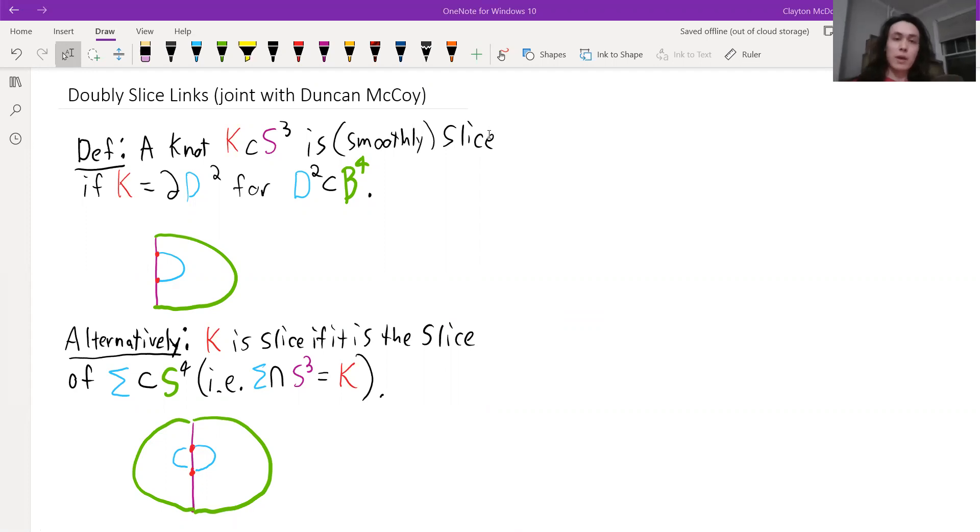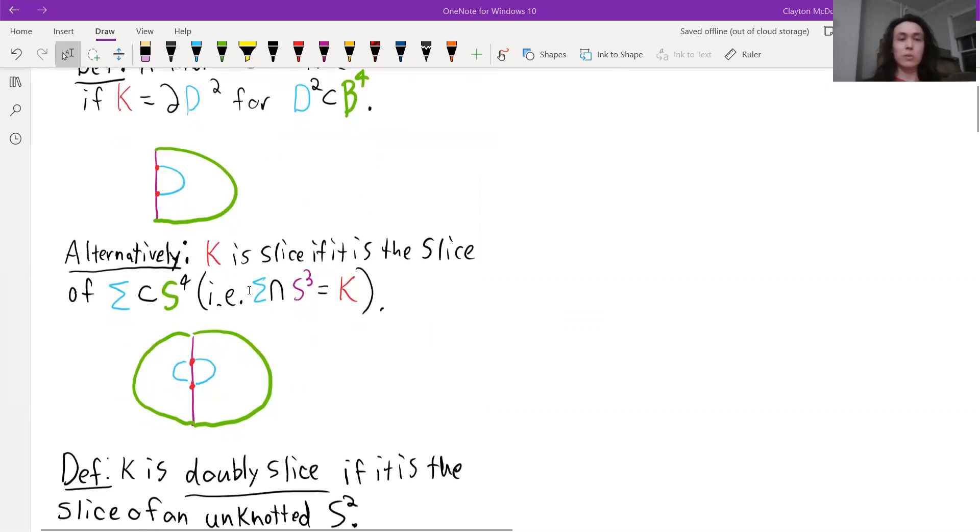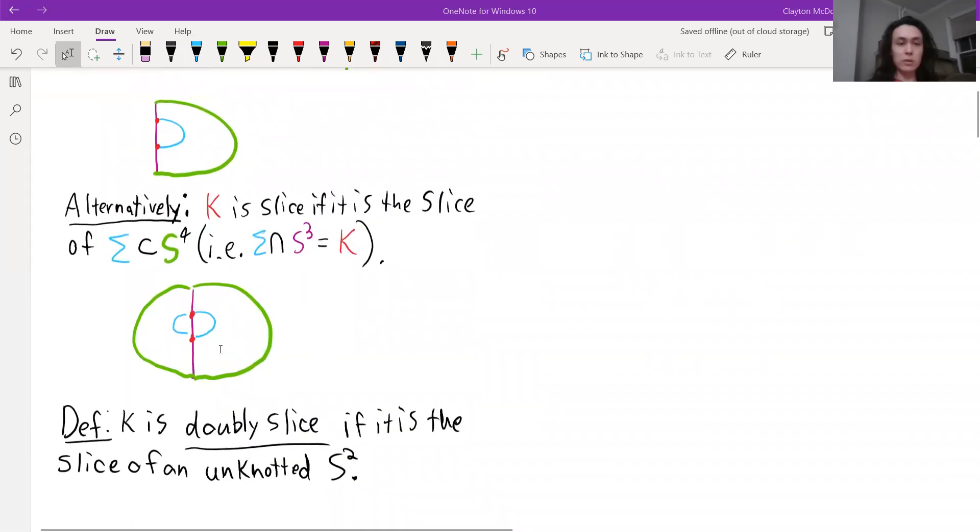A knot K is smoothly slice if it's the boundary of a disk in B4. That's maybe the definition people are most familiar with, but alternatively, we can think of K as slice if it is the slice or cross section of a knotted sphere in S4. We have these nice schematics here to visualize this.